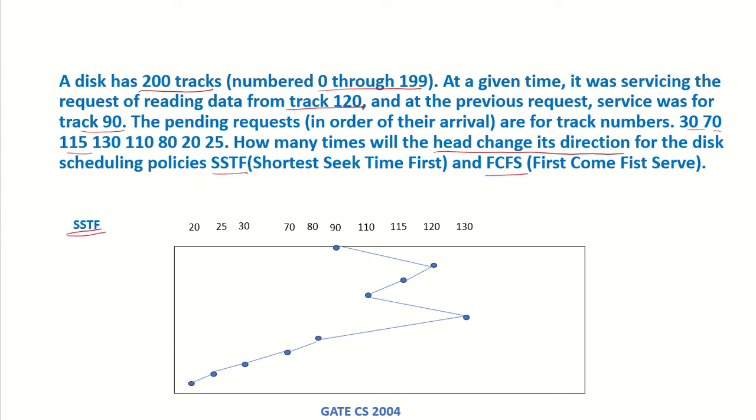So first let's take a look at the disk scheduling policy SSTF. 90 has already been processed, and currently it is at 120 and servicing this request. Now the requests are for these particular tracks. If we look at this policy shortest seek time, whichever track is closest to the current track, the head will be moved there.